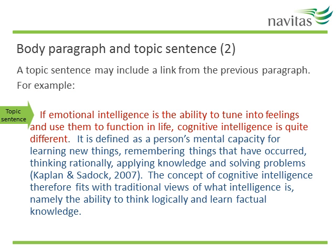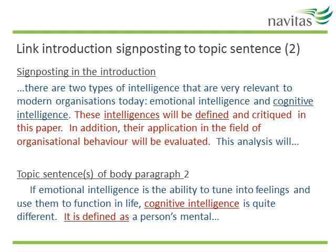This is the next body paragraph of the same essay, showing an example of how one paragraph can link to a previous paragraph. This guides the reader and helps them move from one idea to the next — in this case, from emotional intelligence to cognitive intelligence. My tip is to visualise each paragraph as a carriage on a train containing one idea, hooked to the next by a link. Think of paragraphs as visual aids that show your reader the train of thought. This slide shows the link between the signposting in the introduction and the key terms in the topic sentence and the sentence after the topic sentence.